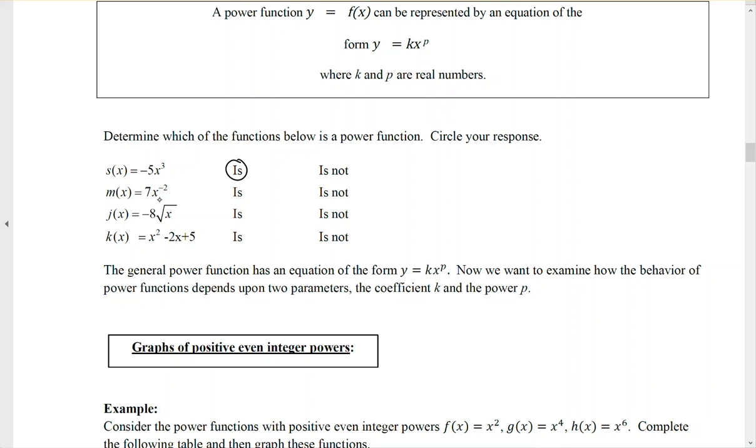Same idea for 7x to the negative 2. The power can be a positive or negative real number, and 7 is a real number. So we're still good.